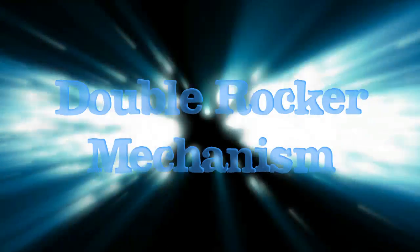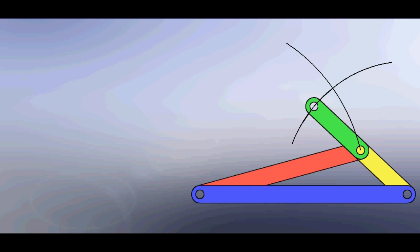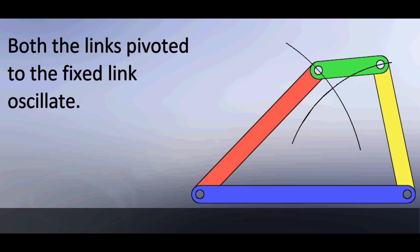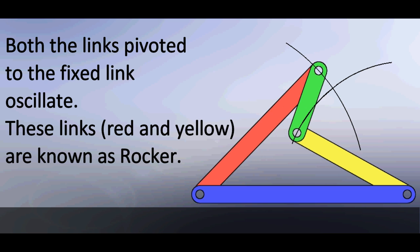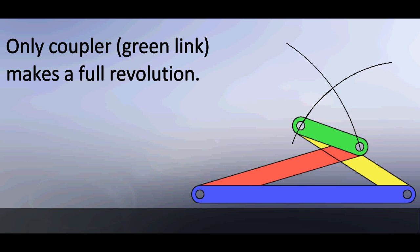Double rocker mechanism. It is a 4 bar mechanism. Both the links pivoted to the fixed link oscillate. These links are known as rocker. Only coupler makes a full revolution.